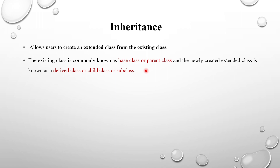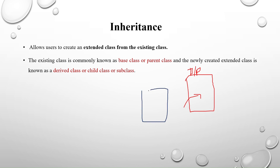Why do we need inheritance? Consider I want to create a new class and write some code, but already one class exists — that's my base class or parent class. Some of the code I wanted to write in my new class is already included in that base class. So I don't have to write everything again, because that code already exists in the base class.